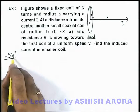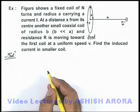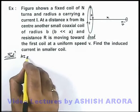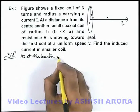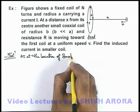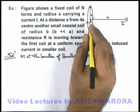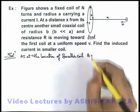To find the current in the smaller coil, we need to first calculate the EMF induced in it. For which, we find out the magnetic induction at the location of the smaller coil, which will be certainly due to the bigger coil. For this, we use the magnetic induction at an axial point of a circular coil.